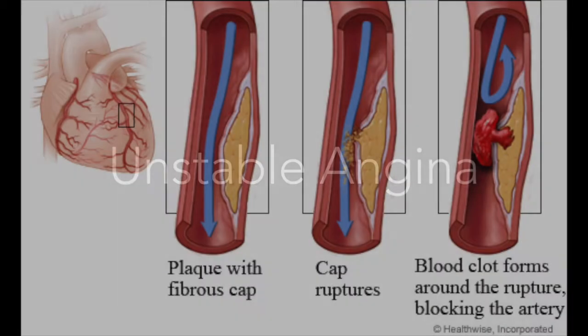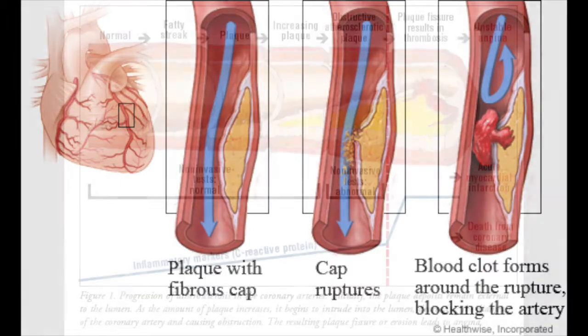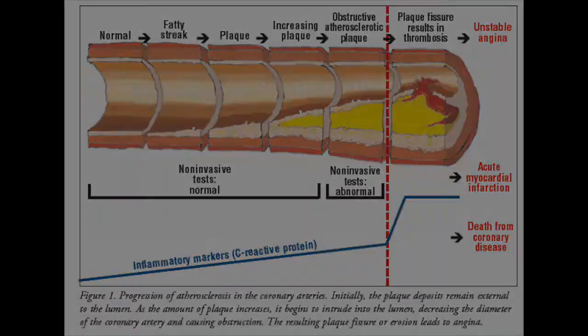Other causes of stable angina are emotional stress, cold temperatures, heavy meals, and smoking. Unstable angina may occur at any time, not only when the coronary arteries narrow. It is caused when a blood clot forms in an area of the artery with built-up plaque. Unstable angina is dangerous and may indicate an oncoming heart attack.